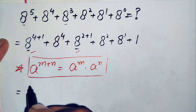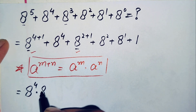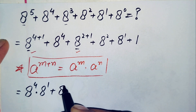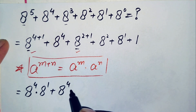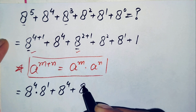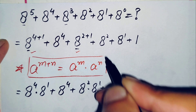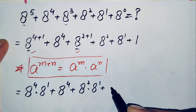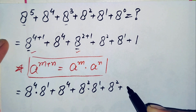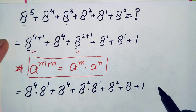This equals x to the power 4 times x to the power 1, plus x to the power 4, plus x to the power 2 times x to the power 1, plus x to the power 2, plus x to the power 1, which is simply 8, plus 1.